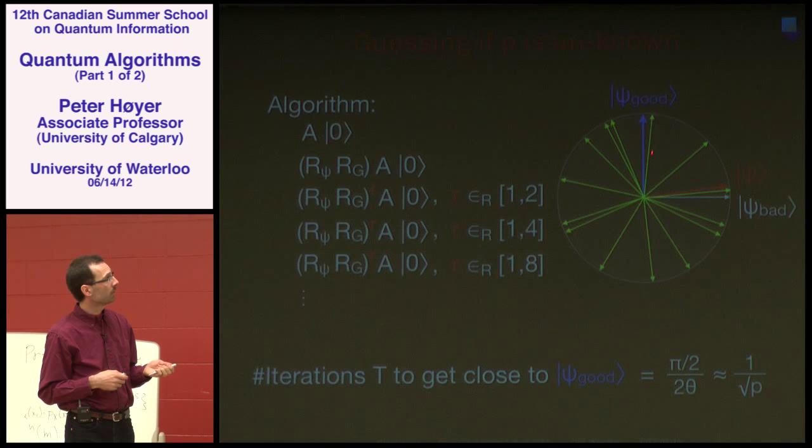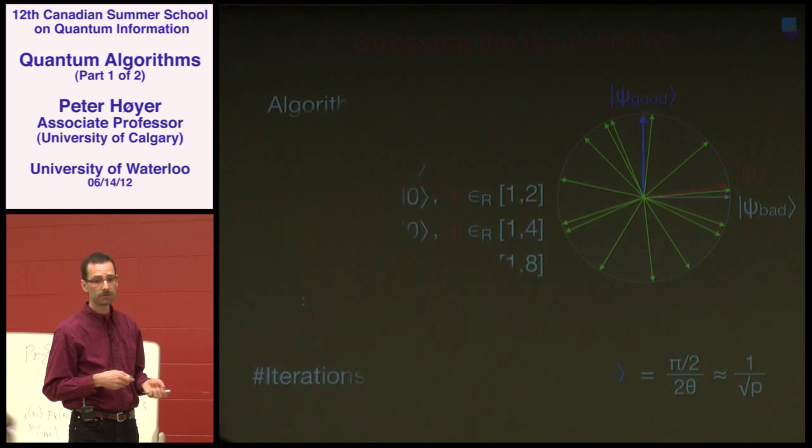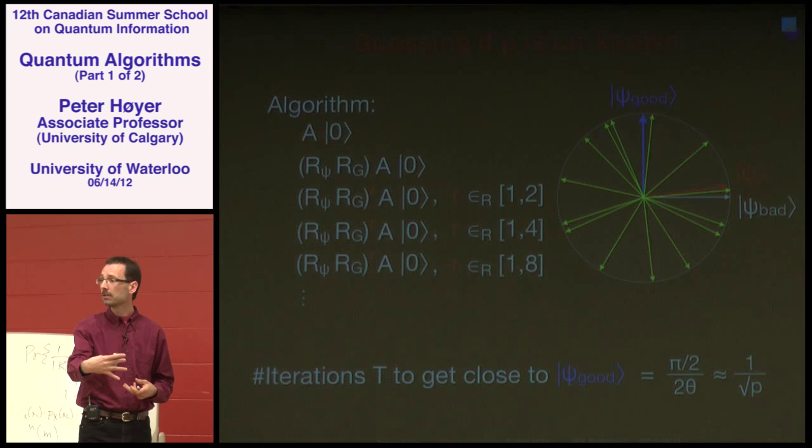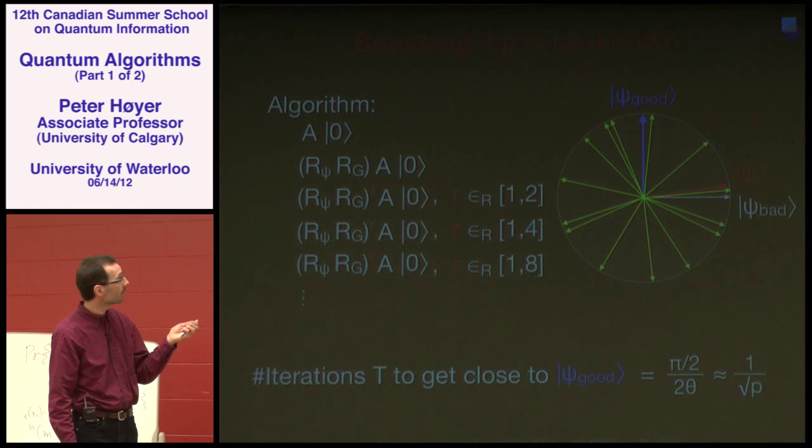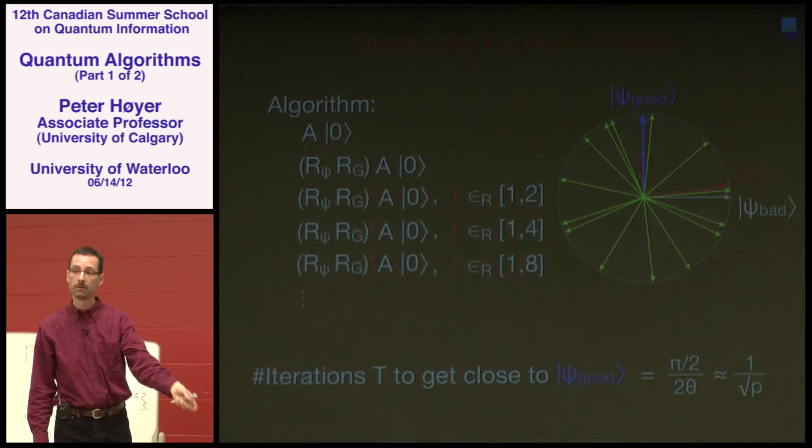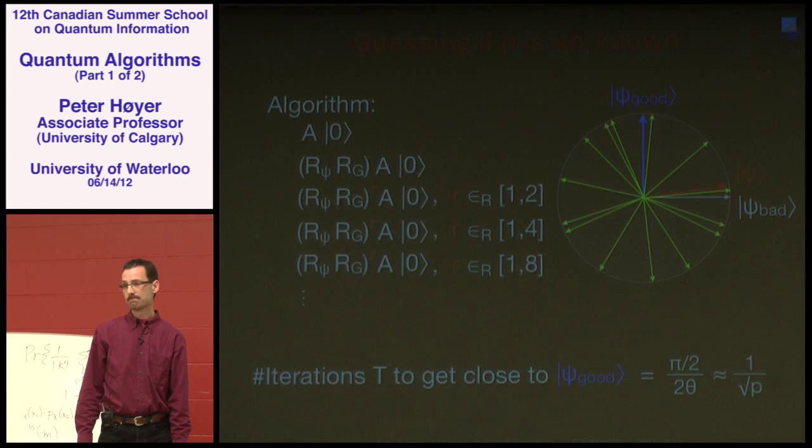With exponential searching, even without knowing P, you will get close to a solution in an expected number of queries of 1/√P — retaining the quadratic speedup. Even if you don't know the initial success probability, you can achieve 1/√P instead of 1/P queries.